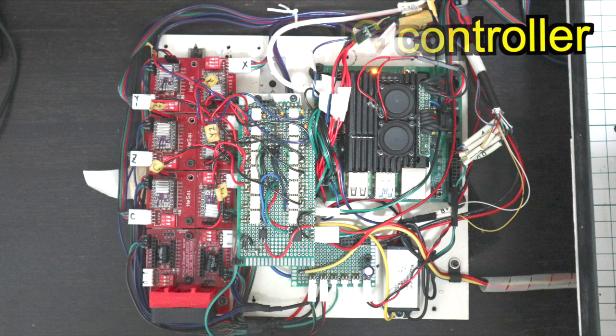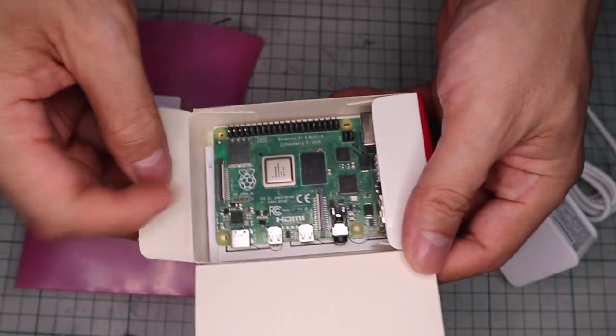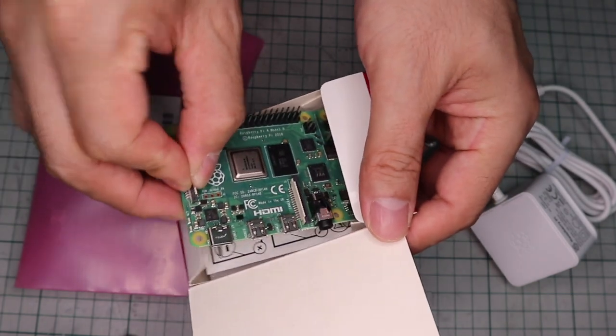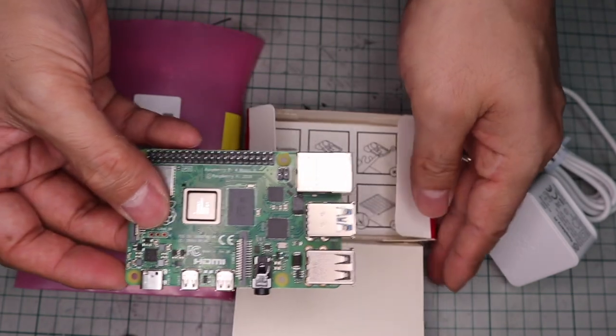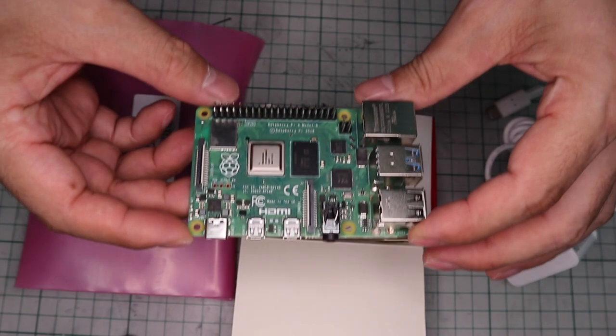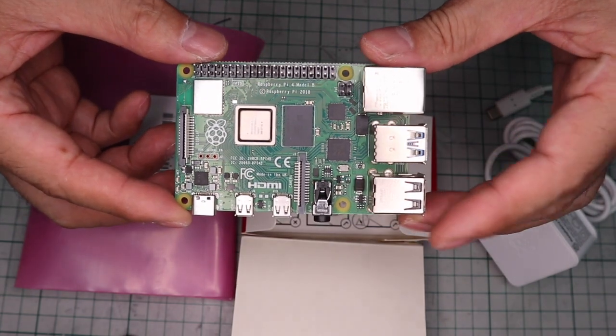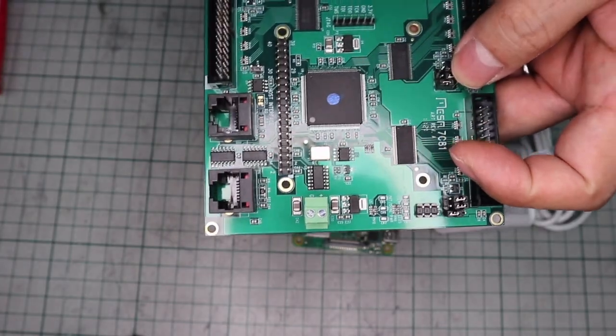The control unit used in the 5-axis CNC machine is a Raspberry Pi 4 and a Mesa 7C81. I also thought it would be more convenient to have two of the same things so that it would be easier to find the problem when something goes wrong.